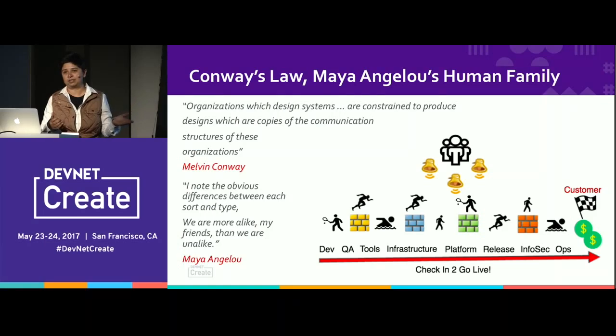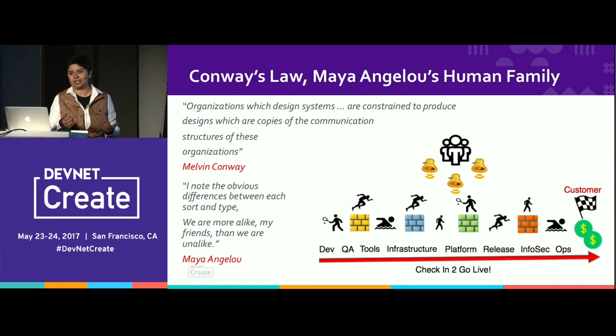Conway says organizations which design systems are constrained to produce designs which are copies of the communication structures of those organizations. Essentially, architecture should drive the organization and not the other way around. When we have administrative divides, it's like a relay race — how many times have you missed passing the baton? That handoff pattern is common across Dev, QA, tools, infrastructure, platform, release, InfoSec, and operations. We make money when the product is in the hands of the customer, but if we miss passing the baton, we lose money.